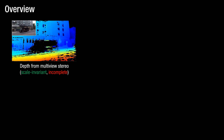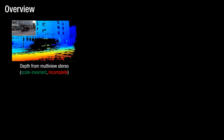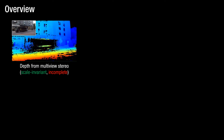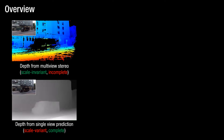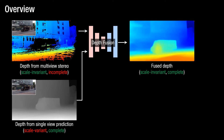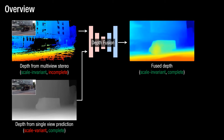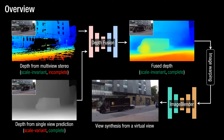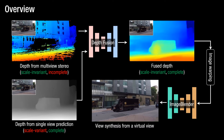Multi-view stereo is scale invariant across views, while it is incomplete. Single-view prediction provides a complete depth map, while it is scale variant. Our key idea is to combine the strengths of stereo-based depth and learning-based depth to estimate scale-invariant and complete depth maps. To do this, we designed a depth fusion network that takes depth from multi-view stereo and depth from single-view prediction, and outputs the fused depth map. Using this depth map, we render a photorealistic virtual view by warping and refining the images.